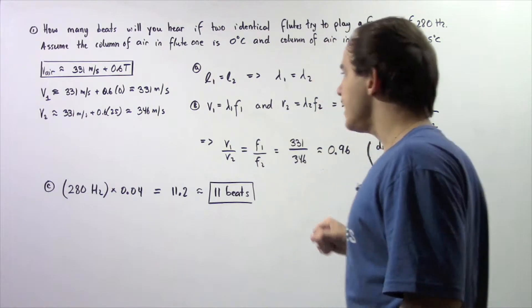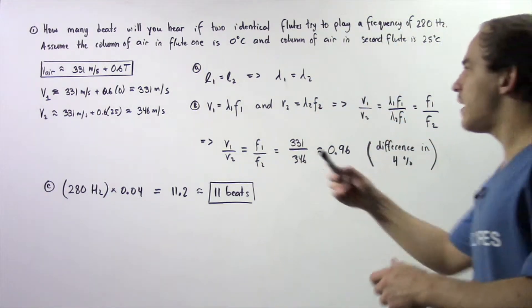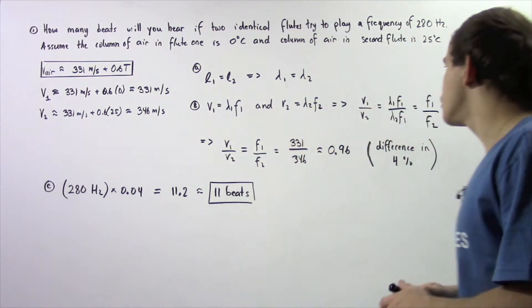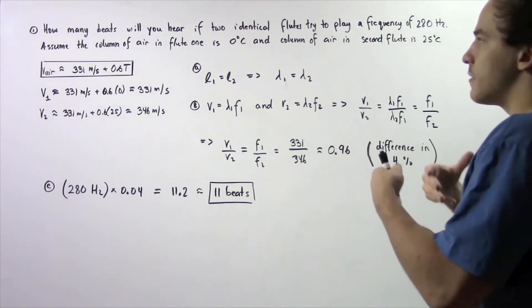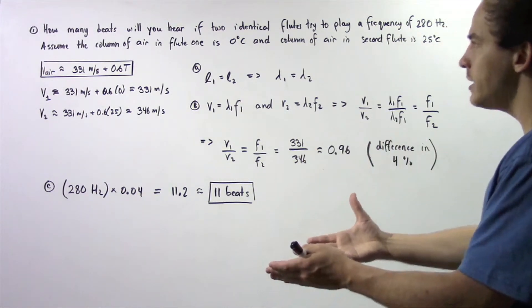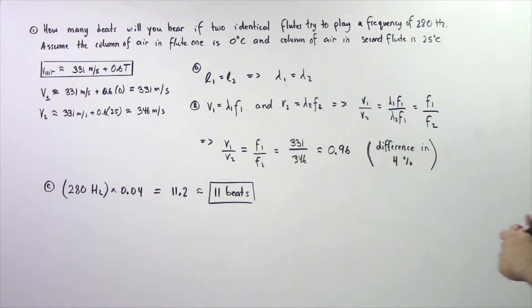Now, in step B, we have to use the following two equations to determine the ratio of the frequency in flute one to the frequency in flute two.